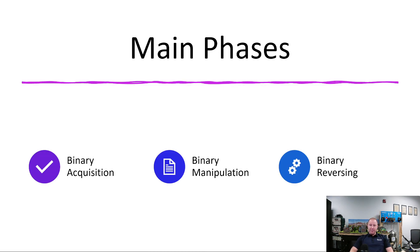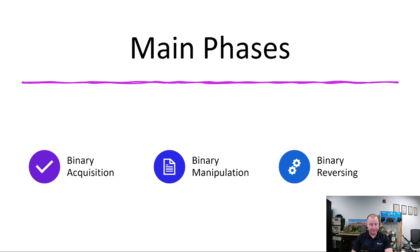The main phases when dealing with binary manipulation and analysis: first, we have to go get that binary — sometimes that's half the battle. Then we do manipulation, potentially heavy manipulation. Finally we finish up with binary reversing, where you actually load it into Ghidra and do some cool stuff.